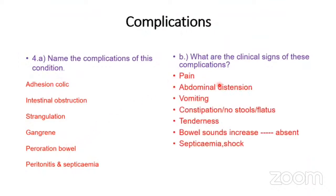The clinical signs of these complications are: pain, abdominal distension, vomiting, constipation, and no passage of stool or flatus. There is severe tenderness all over, especially localized tenderness over the area of strangulation. In the early stages bowel sounds are increased; later, when peritonitis sets in, bowel sounds will be absent. Finally the patient goes into septicaemic shock, which carries high mortality.